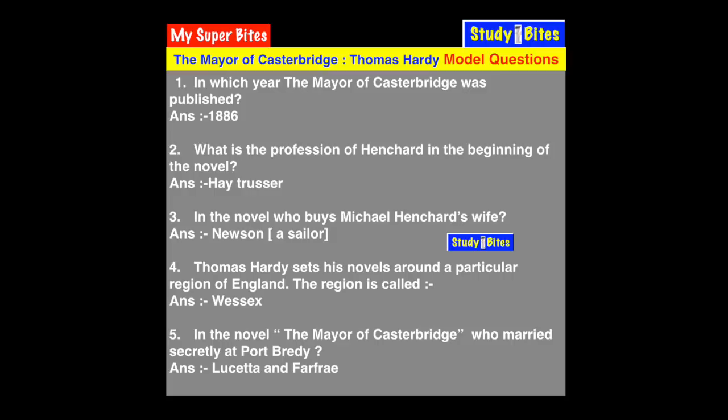Question 3: In the novel, who buys Michael Henchard's wife? The answer is Newson, who was a sailor. Michael Henchard, his wife Susan, and their three-month-old child went to a village fair where Henchard drank too much alcohol and sold his wife and child to a sailor named Newson.